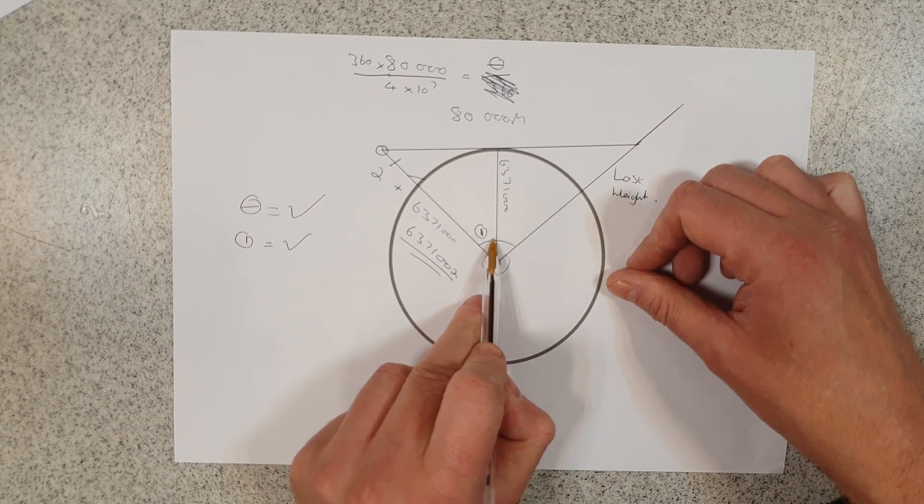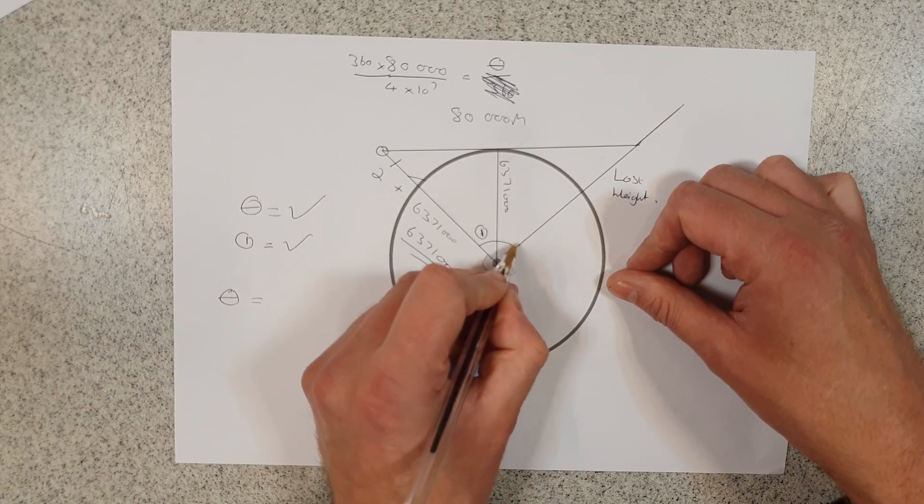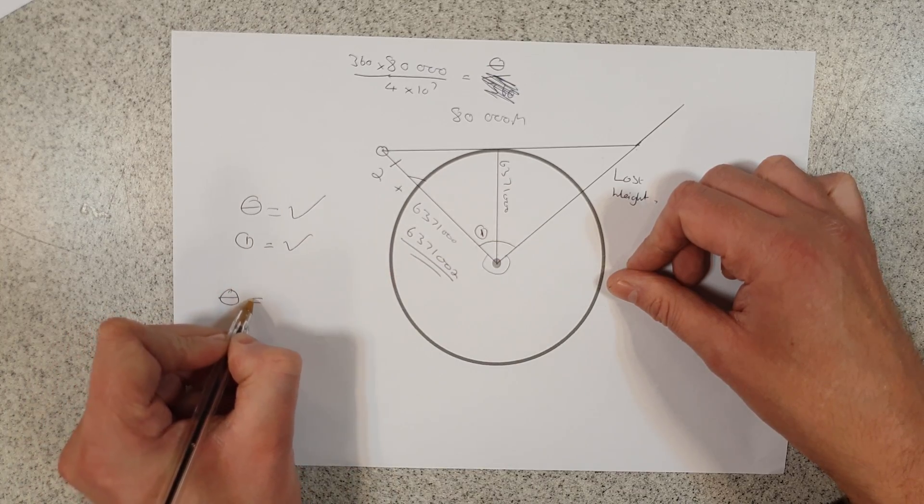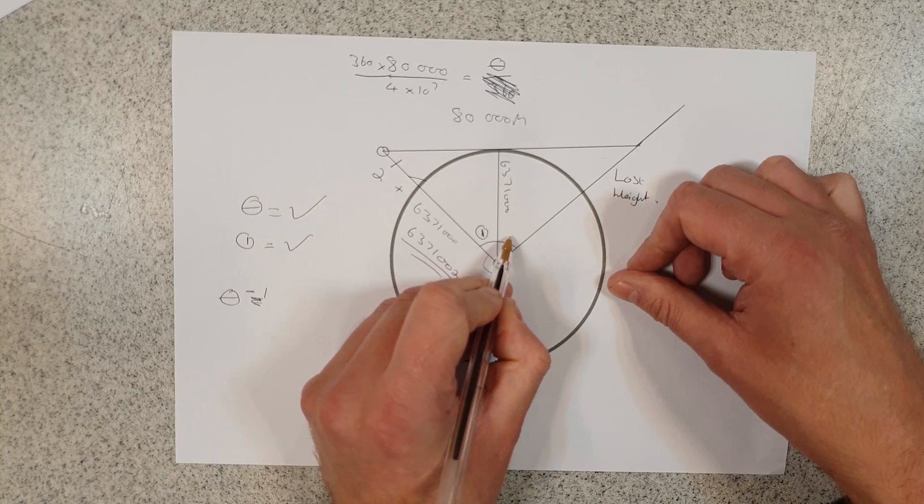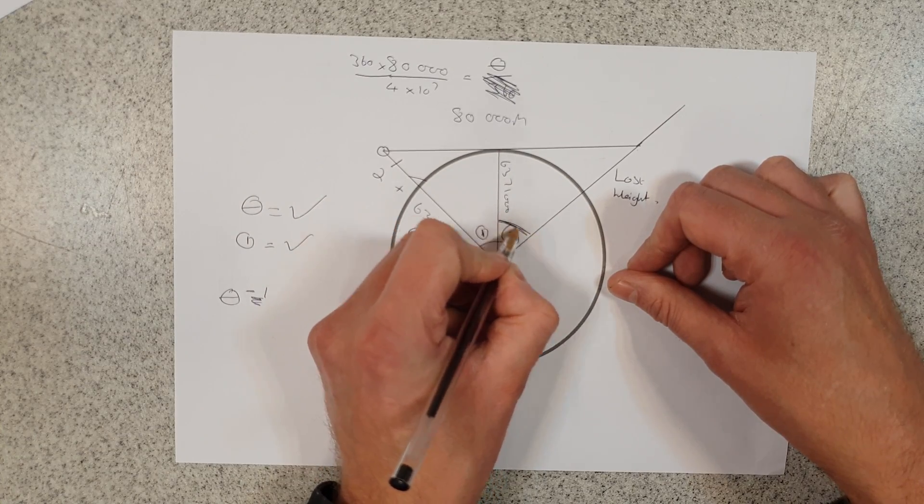Now if I know angle 1 and I know the full angle, then theta, which was the full angle, minus angle 1 is going to leave me this. I'm going to call it angle 2. So I now know this angle here between these two distances.